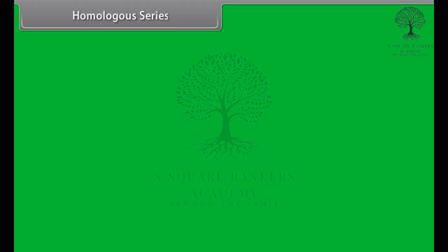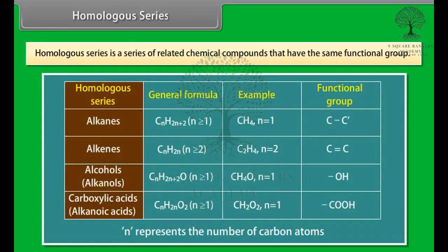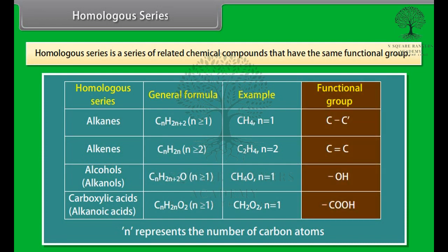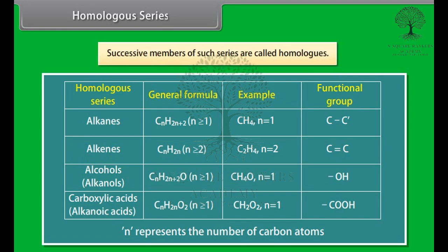Homologous series. Homologous series is a series of related chemical compounds that have the same functional group. These differ in formula by a fixed group of atoms. The successive members of such series are called homologous.